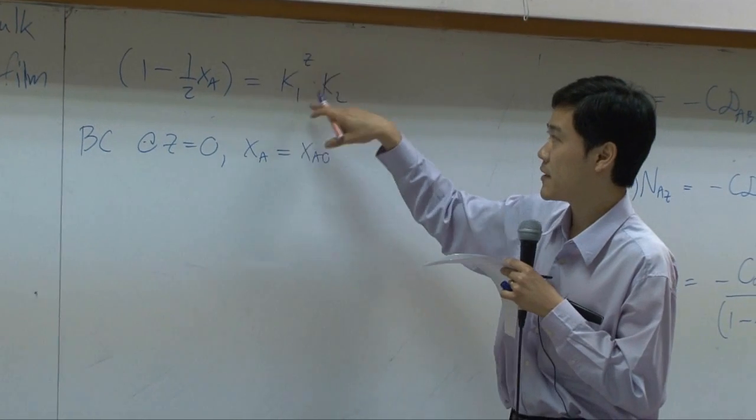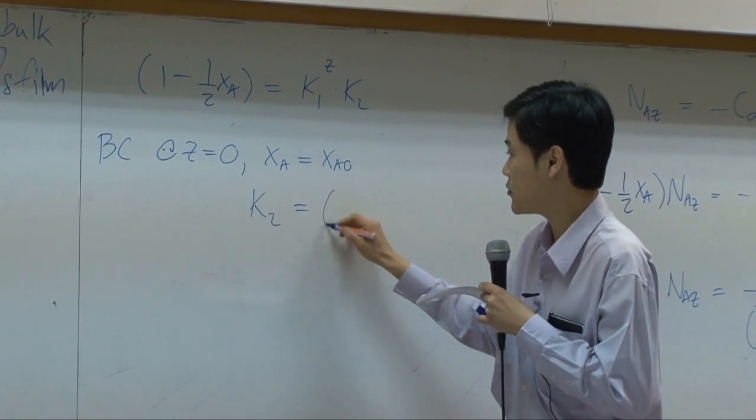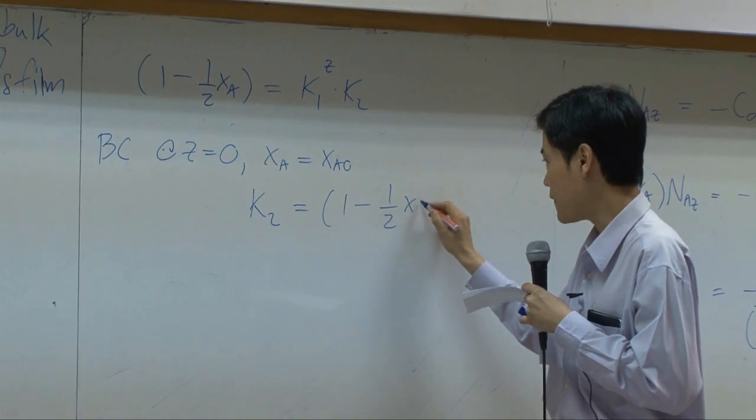At Z equal to 0, this one becomes 1 and therefore, you will have K2 equal to 1 minus half XA0.